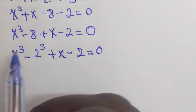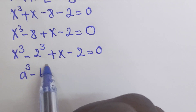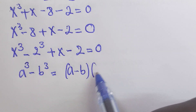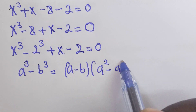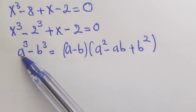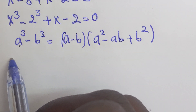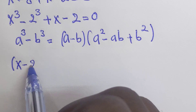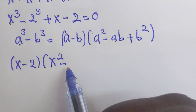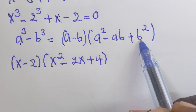Here we are going to apply the formula which says that a to the power of 3 minus b to the power of 3 equals a minus b, times a squared minus ab plus b squared. So a will be replaced by x and b will be replaced by 2. This will be equal to x minus 2, times x squared minus 2x plus 4.